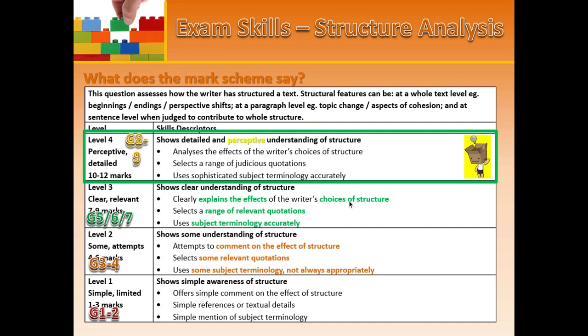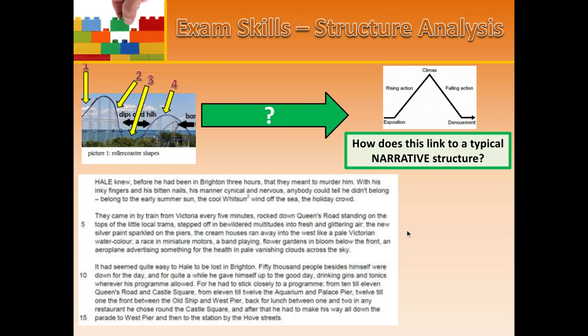In terms of judicious quotations: first you find a range of relevant quotations, then you pick the best ones — the ones that clearly show what you're trying to say, that are impactful and have a lot to talk about in them. And obviously subject terminology is always very important for the language paper — things like narrative structure and different sentence types.